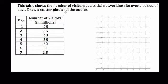Here they tell us that this table shows the number of visitors at a social networking site over a period of days, and they want us to draw the scatter plot below and label the outlier.